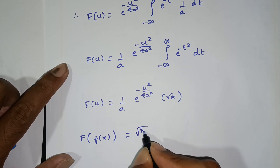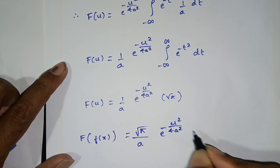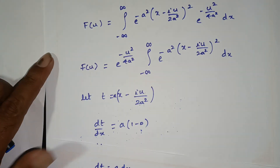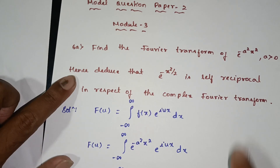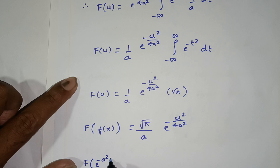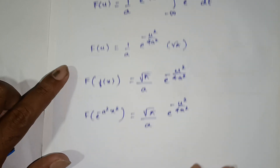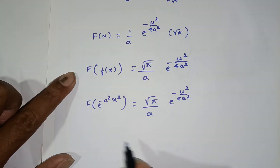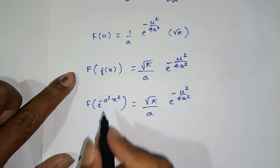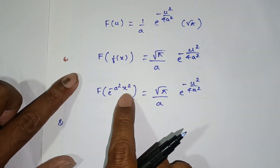So F of u equals 1 by a times e power minus u square by 4a square times root pi. Therefore F of e power minus a square x square is equal to root pi by a times e power minus u square by 4a square. Now to find the Fourier transform of e power minus x square by 2, we look at e power minus x square by 2.